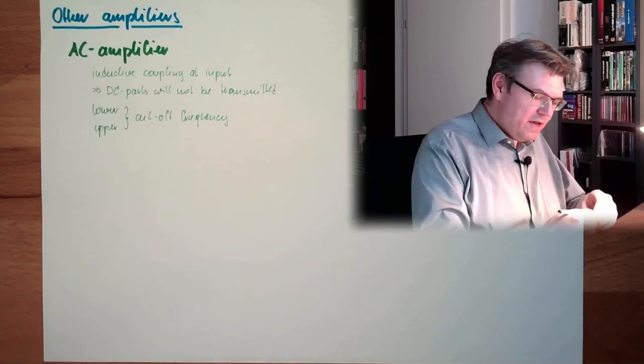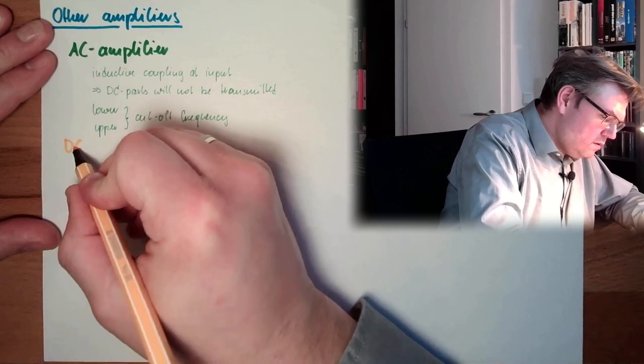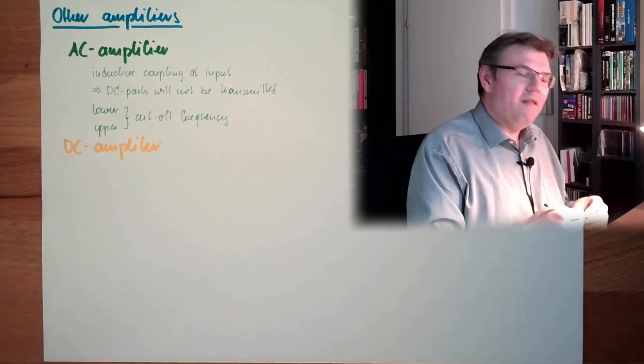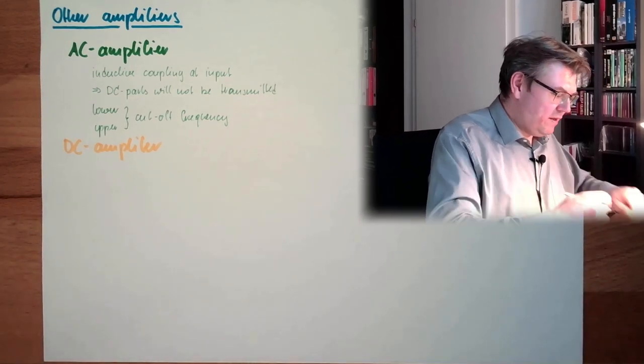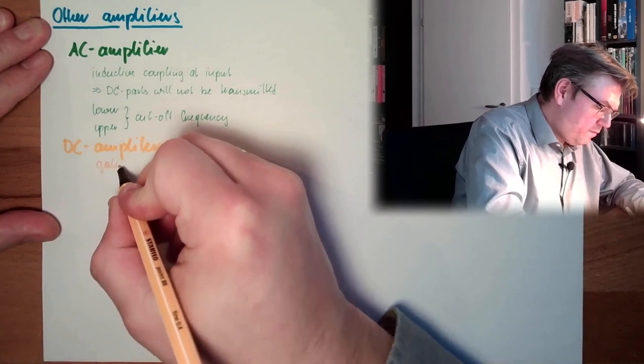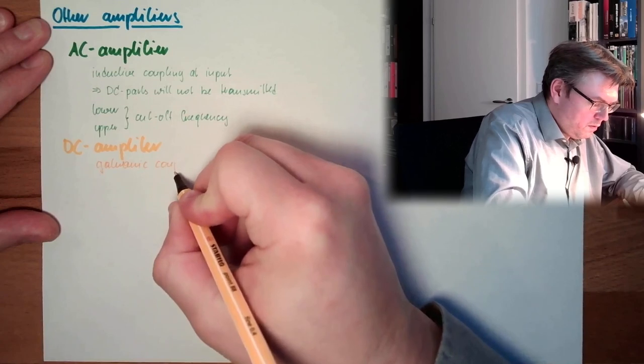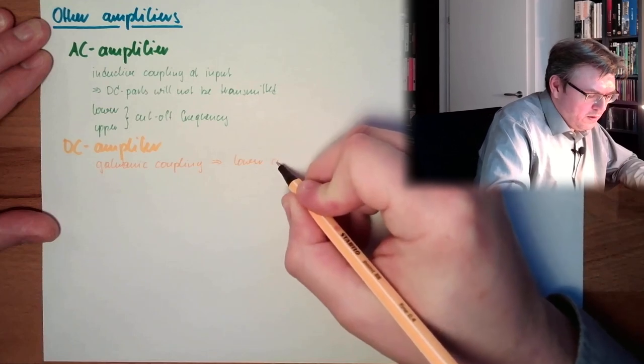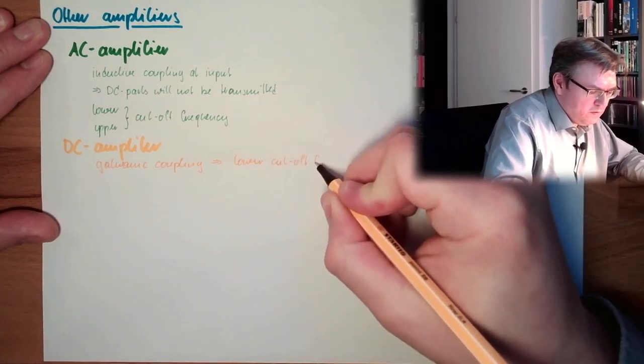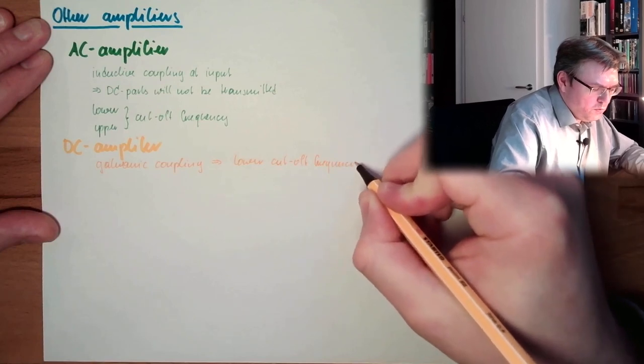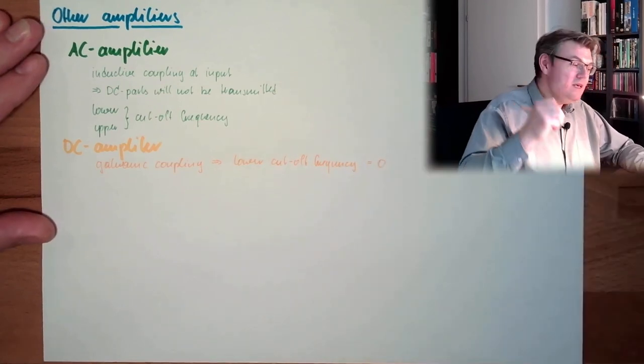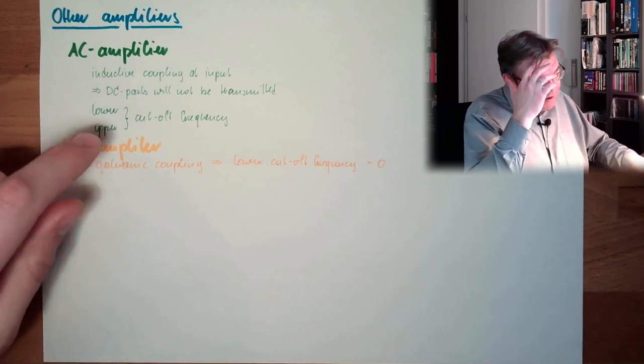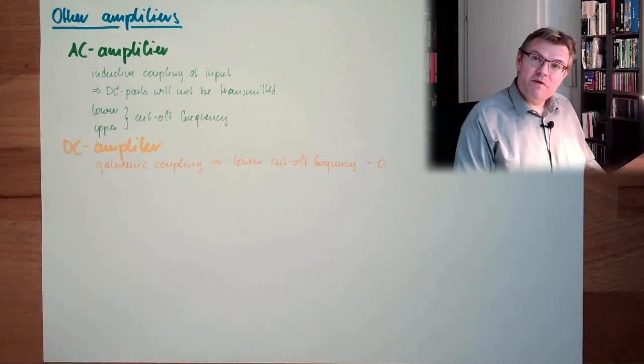And then we have DC amplifiers. They have galvanic coupling. This means the lower cutoff frequency is zero. So these are also gaining DC signals. They are also gaining AC signals. Usually the upper cutoff frequency is a little bit lower than an AC amplifier.